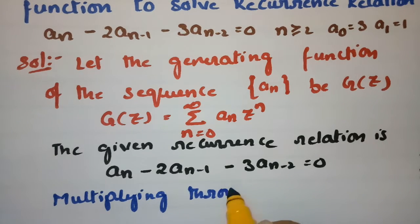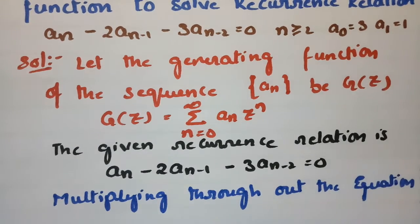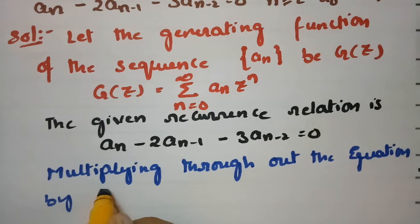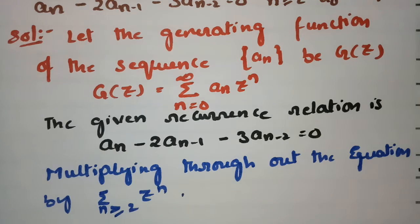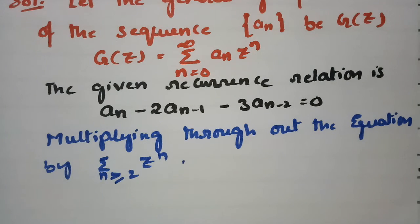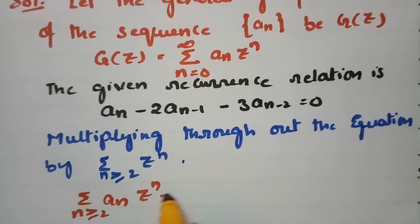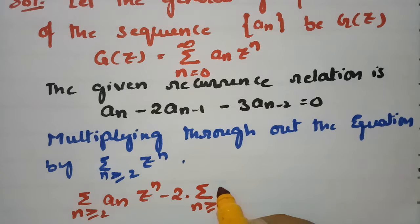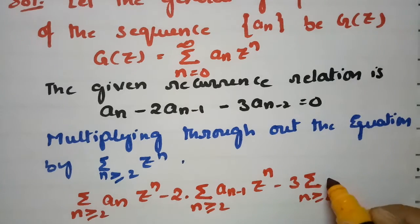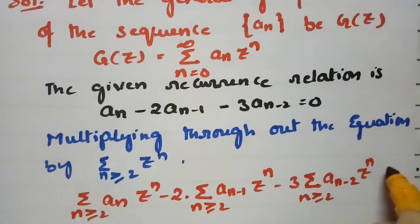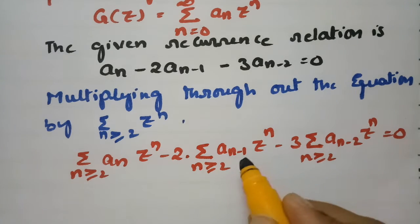Multiplying throughout the equation by the summation for n greater than or equal to 2 of zⁿ, we get: sigma(n≥2) aₙ·zⁿ minus 2 times sigma(n≥2) aₙ₋₁·zⁿ minus 3 times sigma(n≥2) aₙ₋₂·zⁿ equals 0.